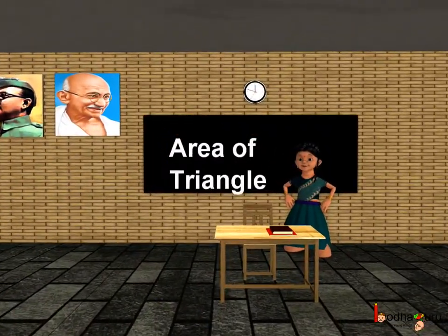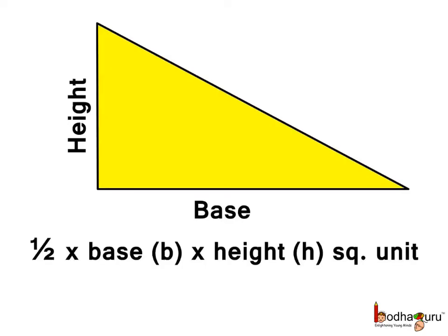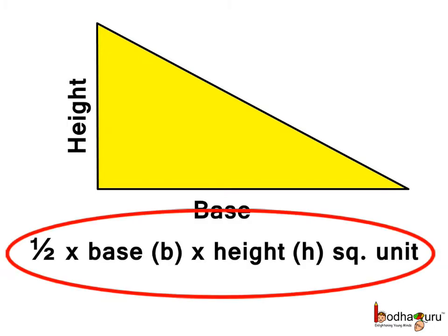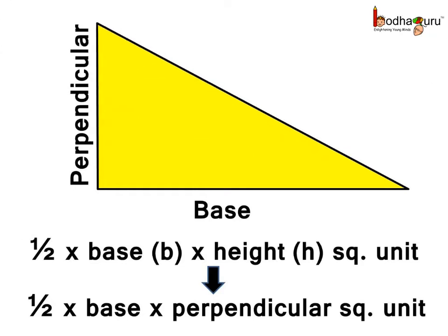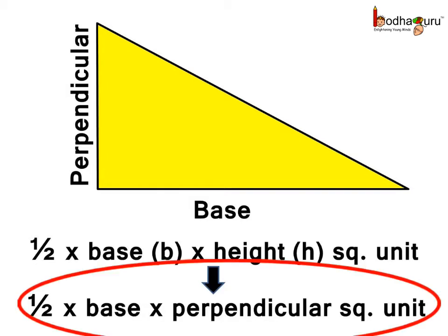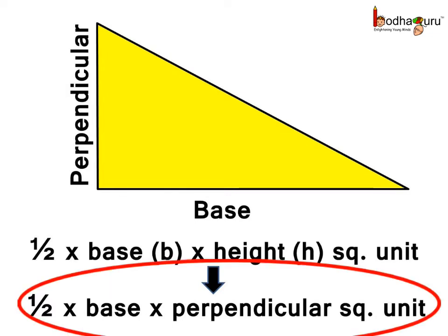Good morning children. Today we shall learn about the area of a triangle. Now we know that the area of a right angle triangle is half base multiplied by height. The height of a right triangle is the length of the perpendicular. So we can write it as: area of a right angle triangle is half base multiplied by the perpendicular, square units.